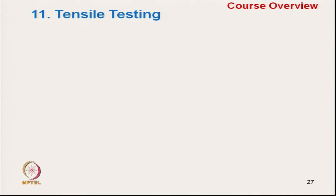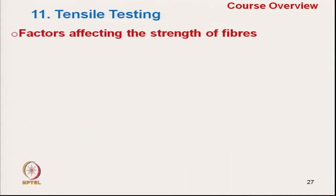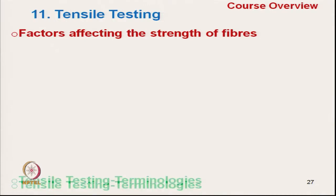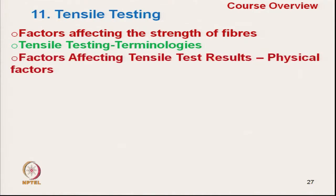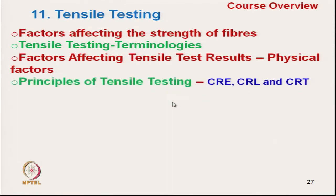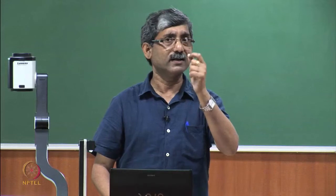Next is tensile testing of textile material. Various factors affect the strength of fibre. Tensile testing terminologies include initial modulus, tenacity, breaking elongation, and yield point. We will clarify how to convert a load-elongation curve to a stress-strain curve. Factors affecting the tensile test result include physical factors such as the gauge length of the material and the speed of the test.